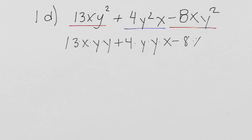and 8 times x times y times y. So I notice that they all have 2 y's and an x, and since the order doesn't matter because of the commutative property of multiplication, they are all like terms.